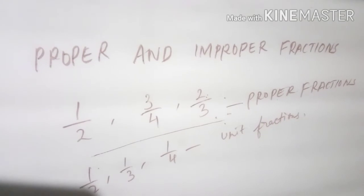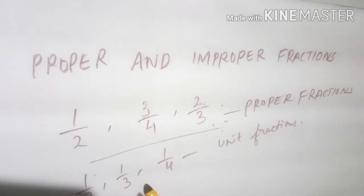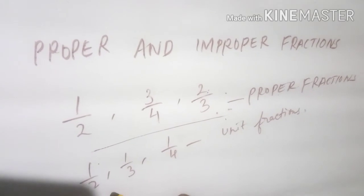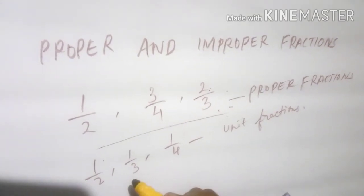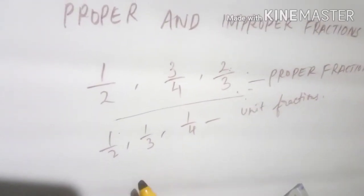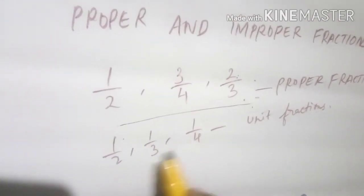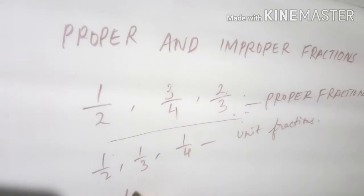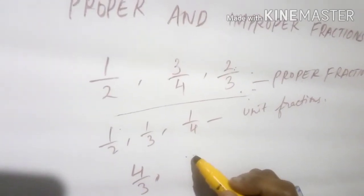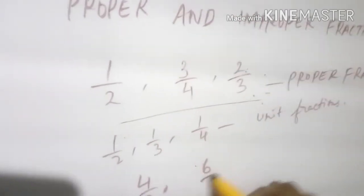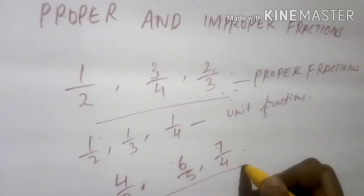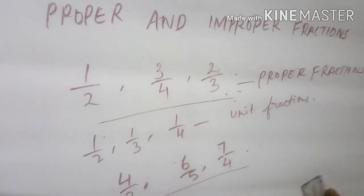Fractions which are equal to or more than one whole are called improper fractions. In an improper fraction, the numerator is greater than the denominator — like 4 by 3, 6 by 5, 7 by 4. These fractions are called improper fractions.